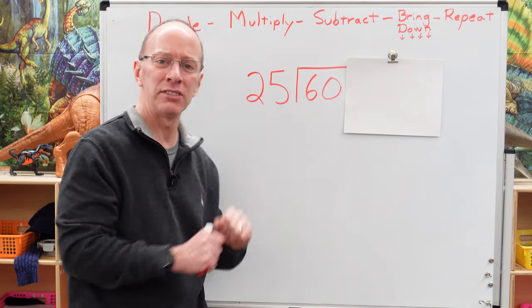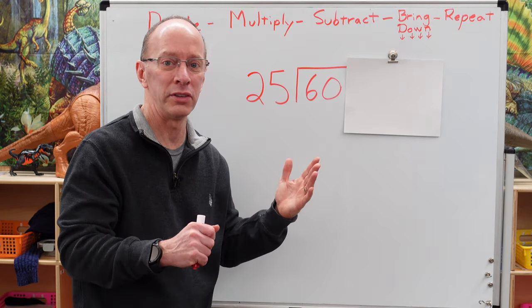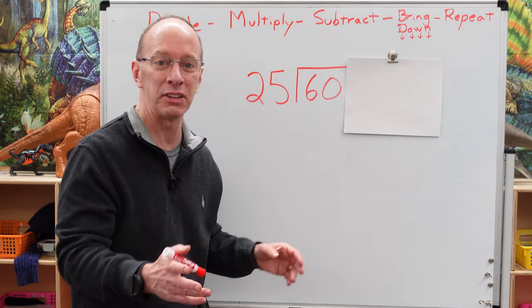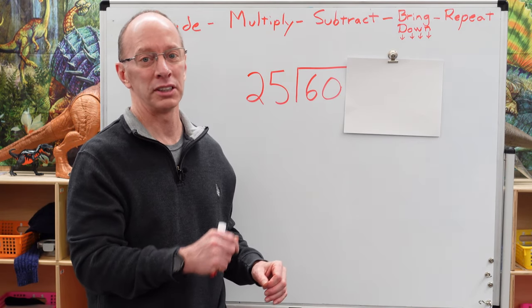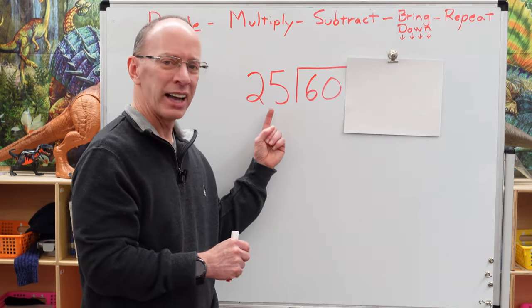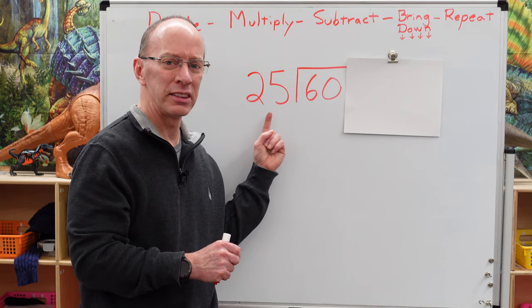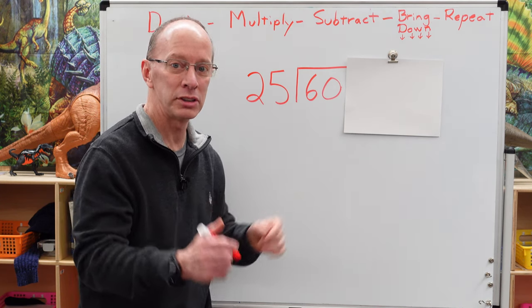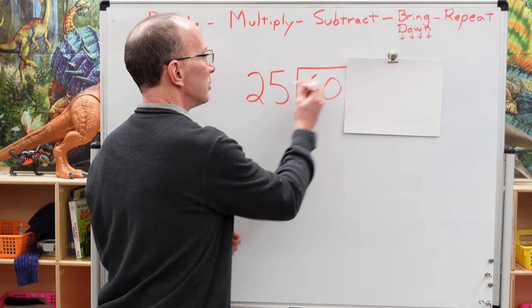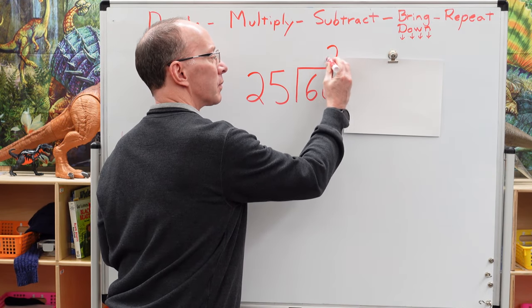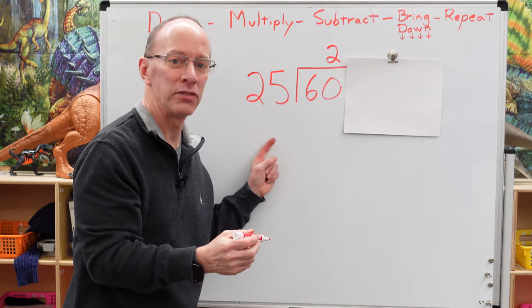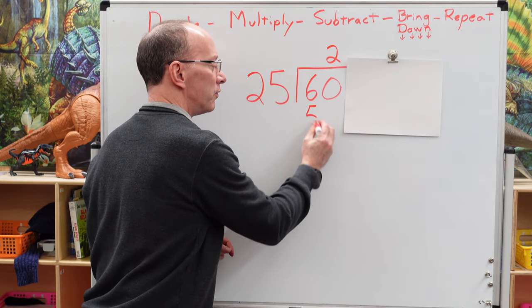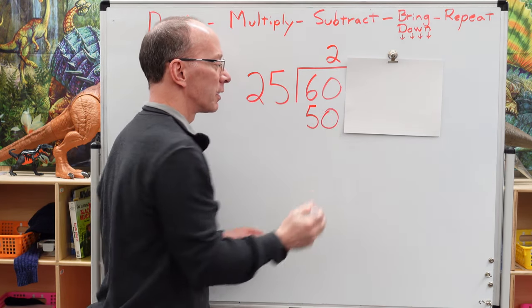So how many times can I put 25 into 60? Well, 25 is like a quarter. You've got 25 cents, and two quarters is 50 cents, three quarters is 75 cents, and four quarters is a dollar. I think I can put 25 into 60 two times. Let's try it.